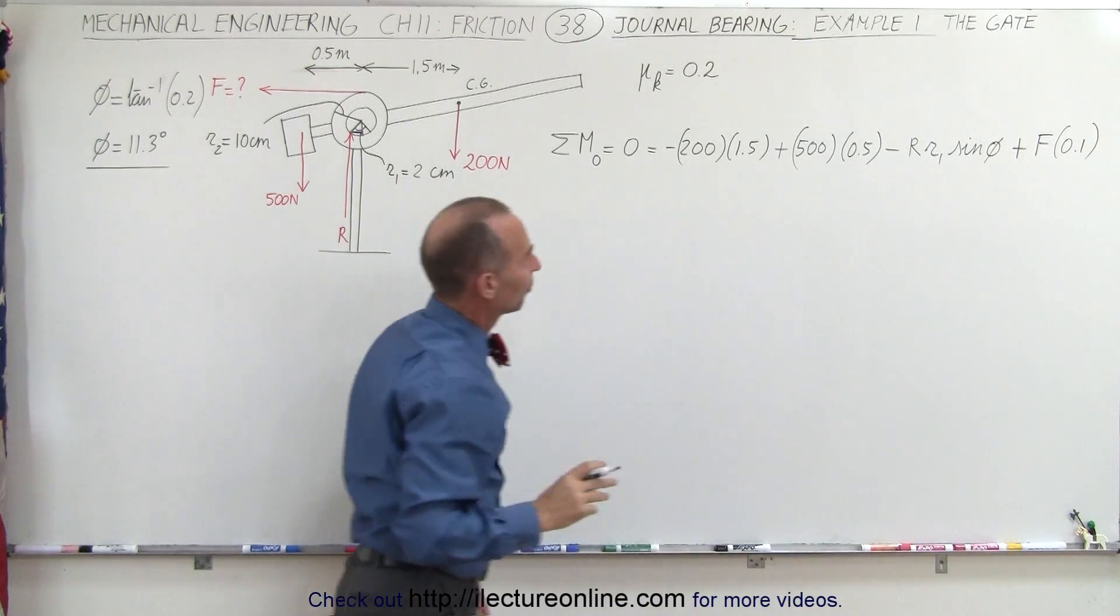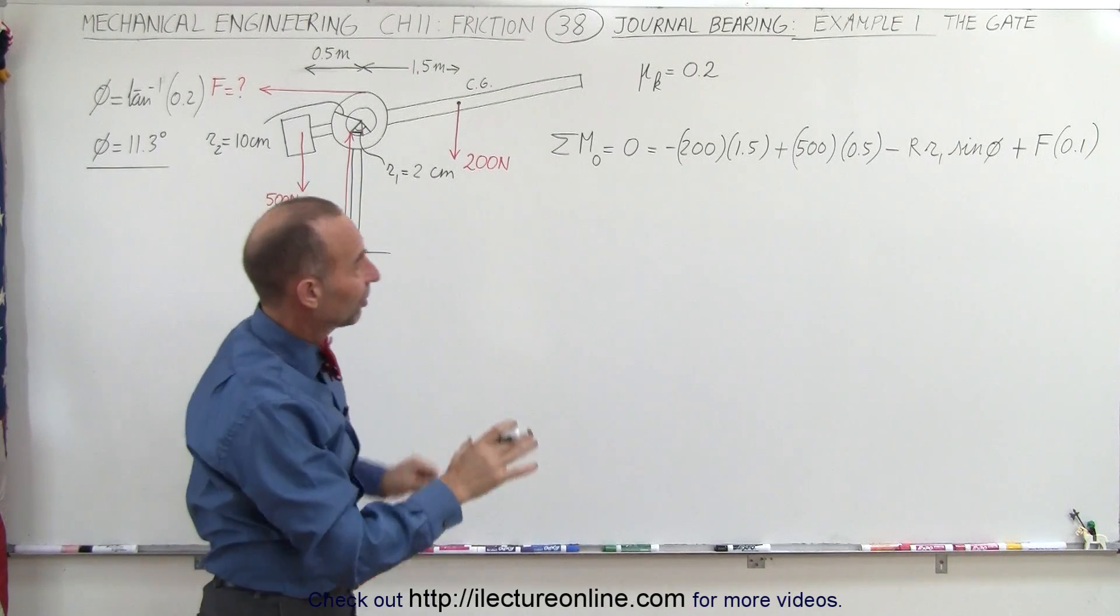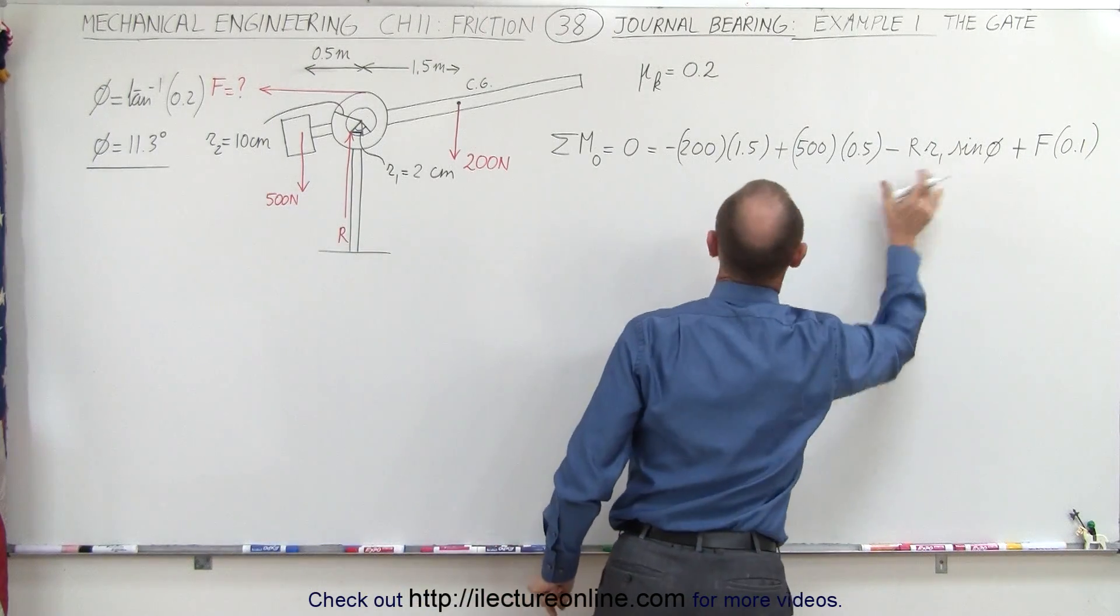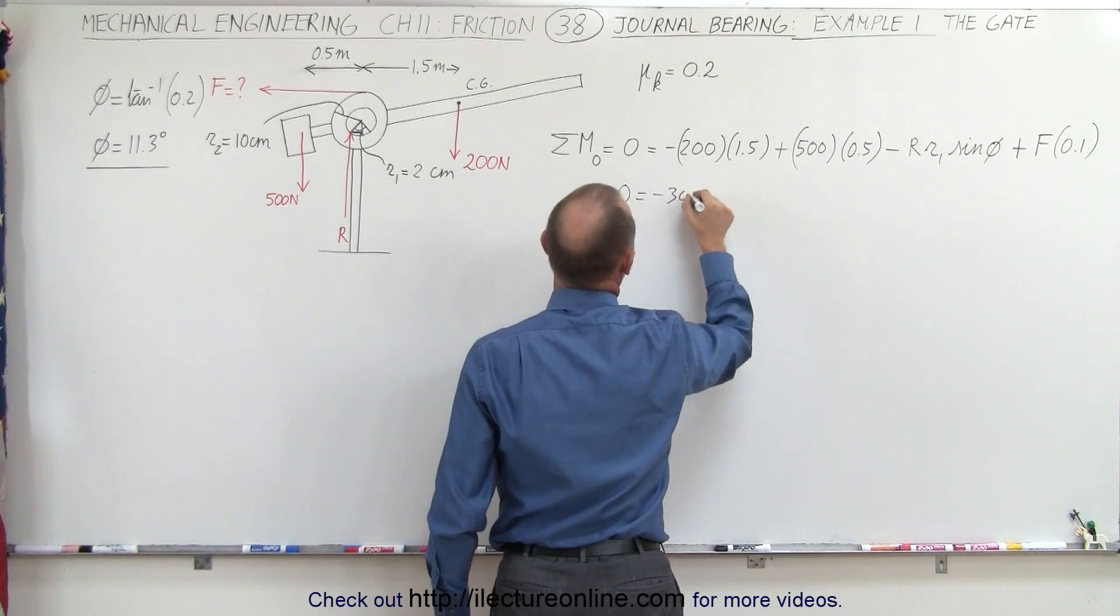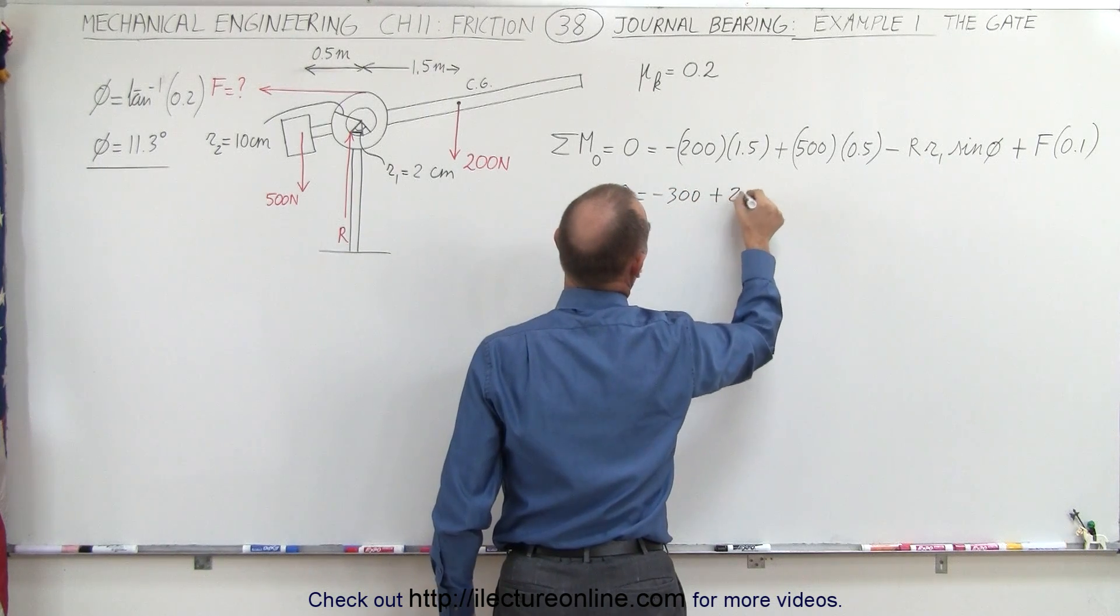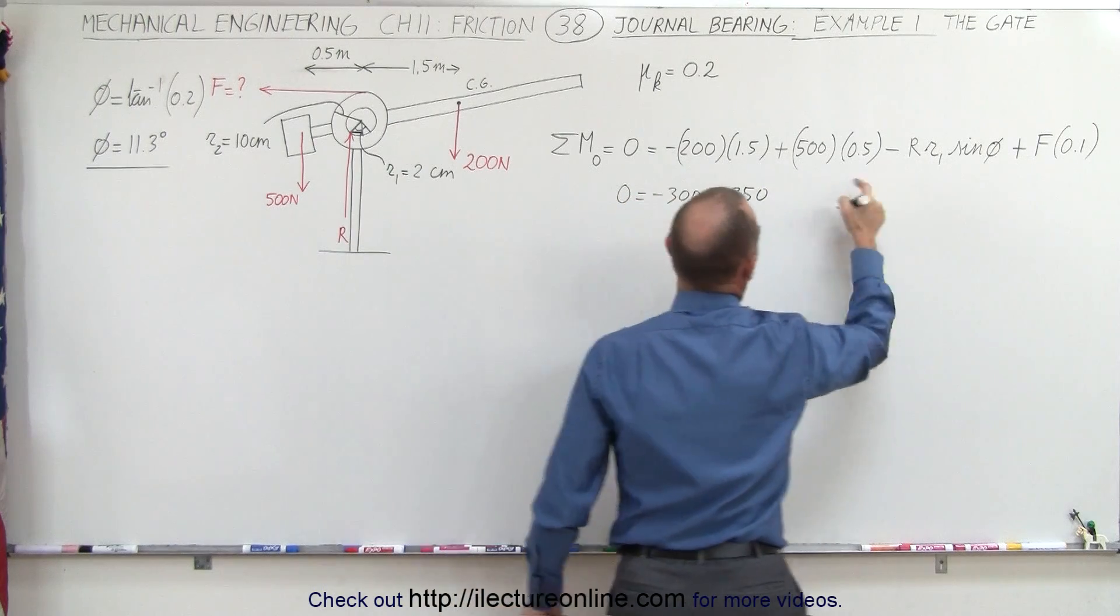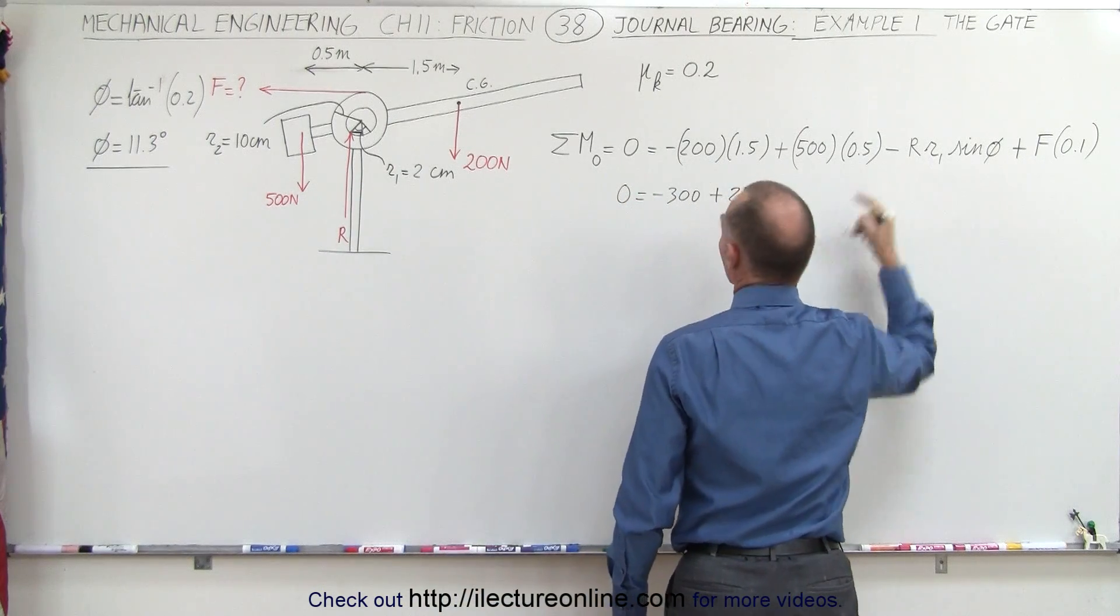So what we're going to do now is simplify this a little bit, plug in what we have here. So zero equals minus 300 plus 250, and that would be minus the reaction force.